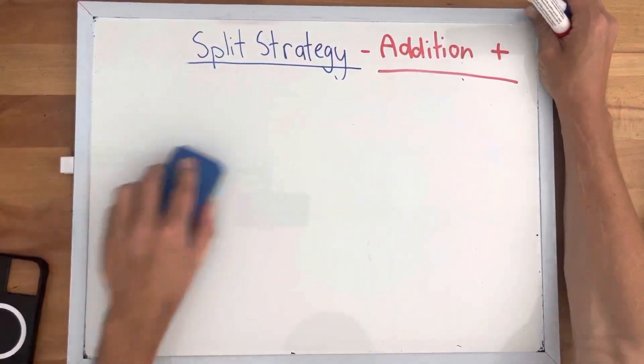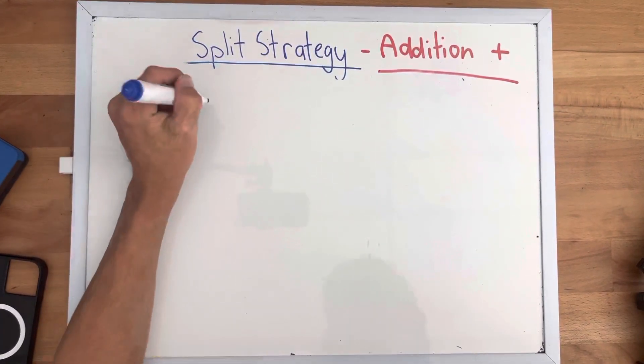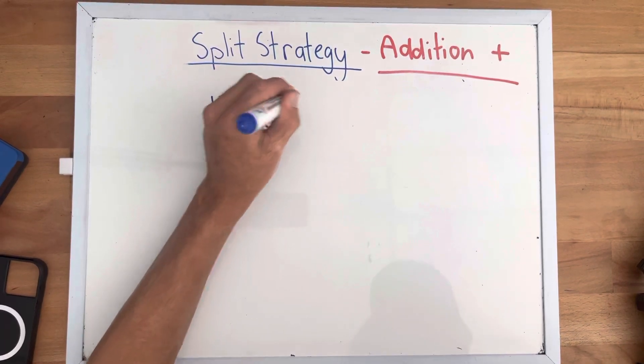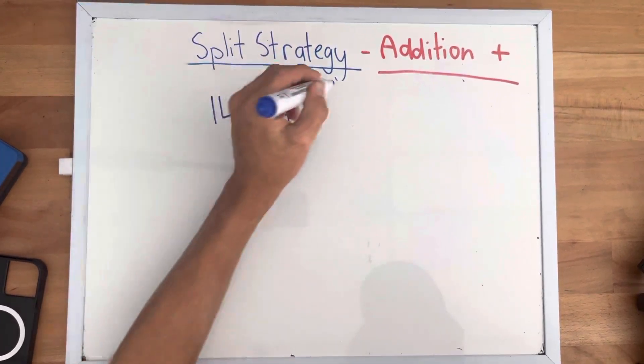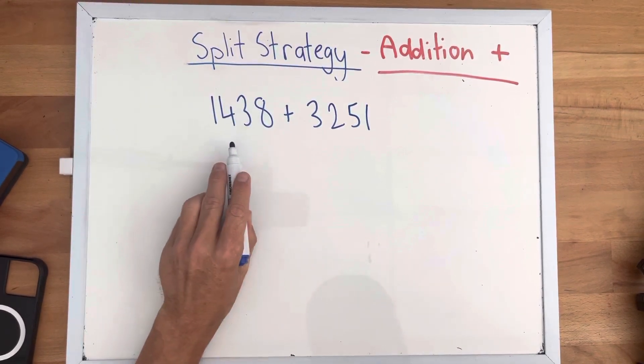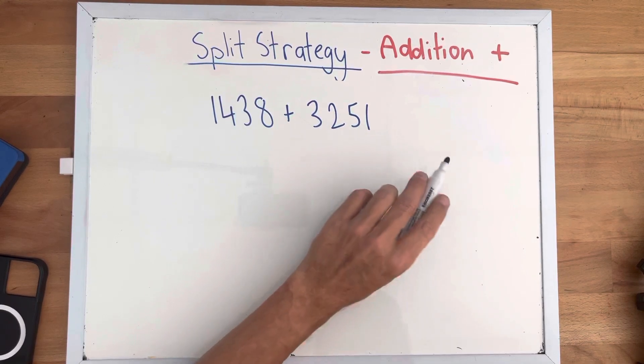Now let's do one more example. And that is going to be our four digit. So we have 1,438 plus 3,251.